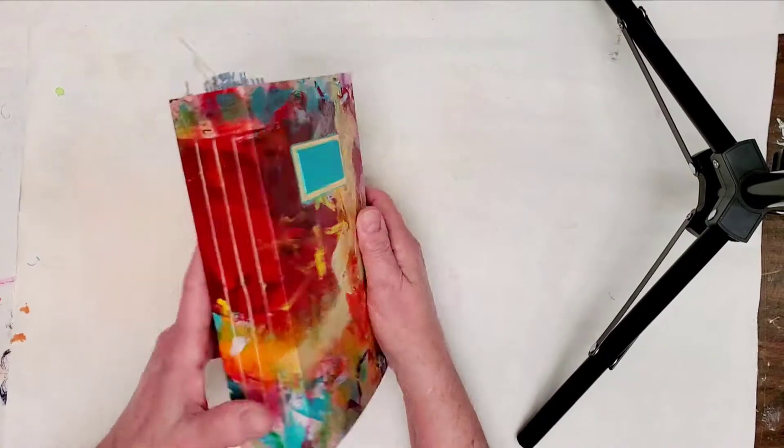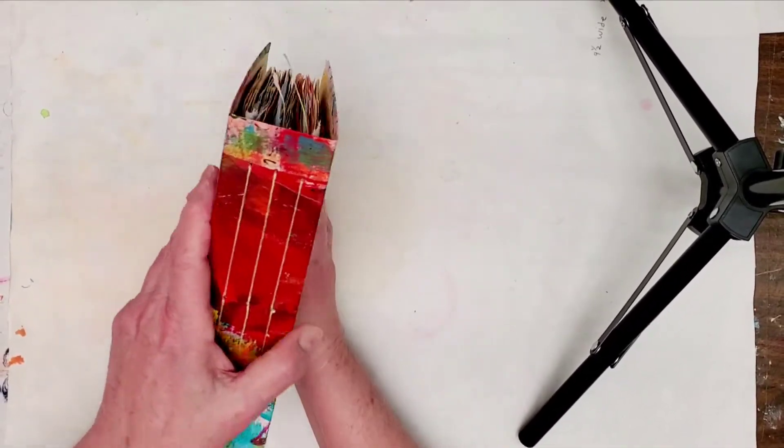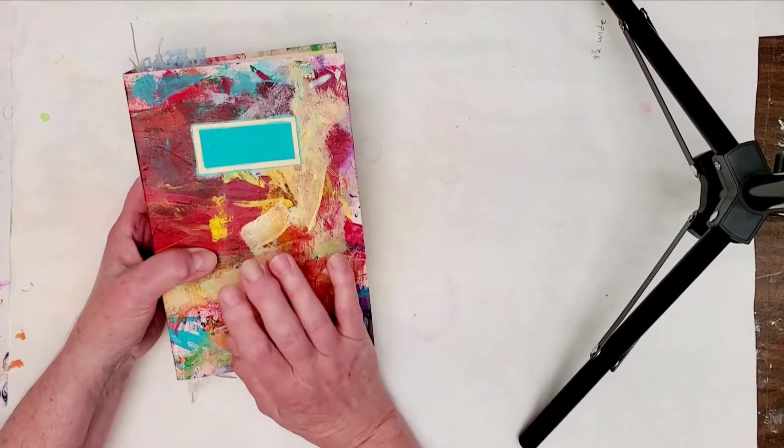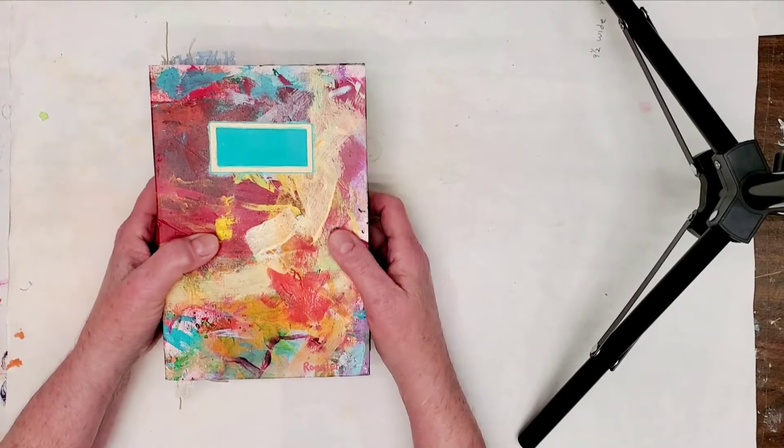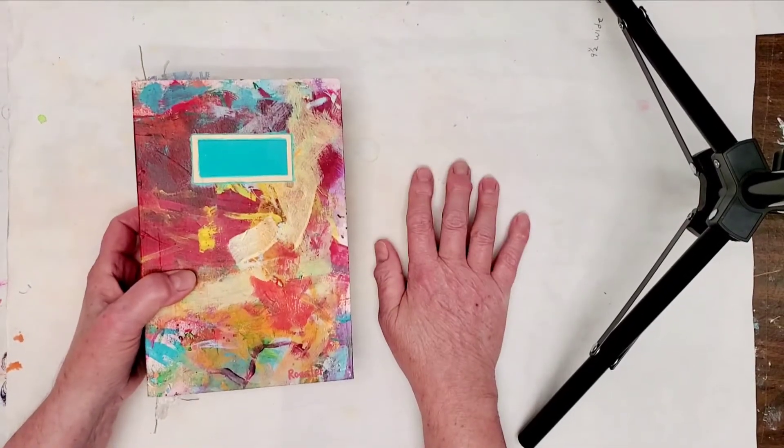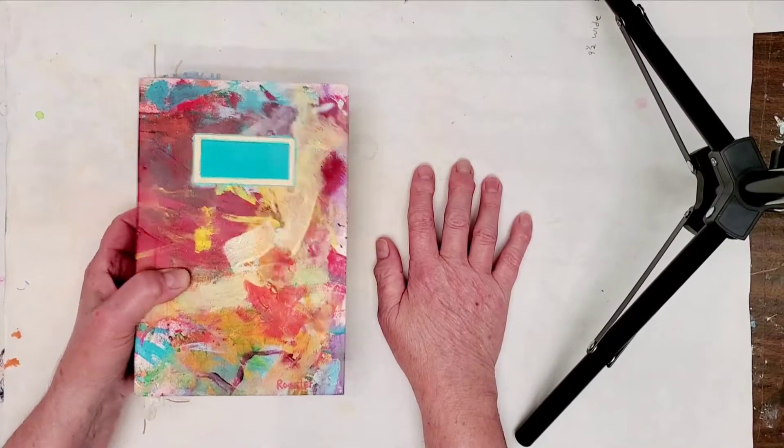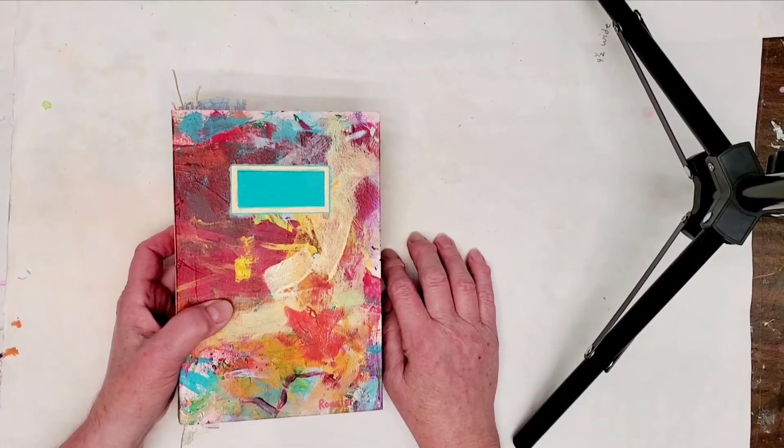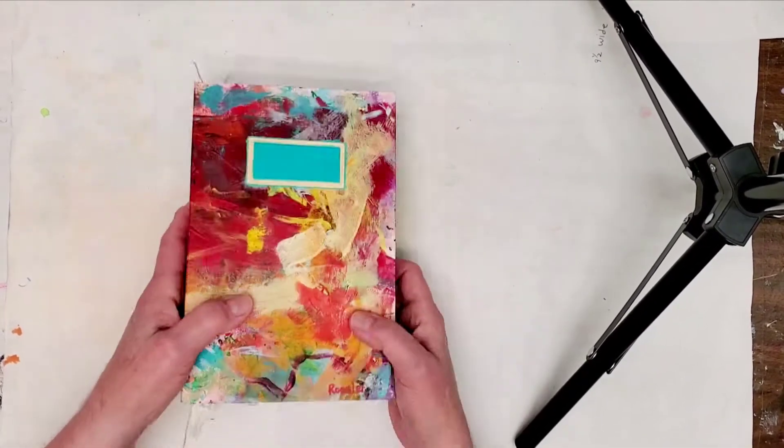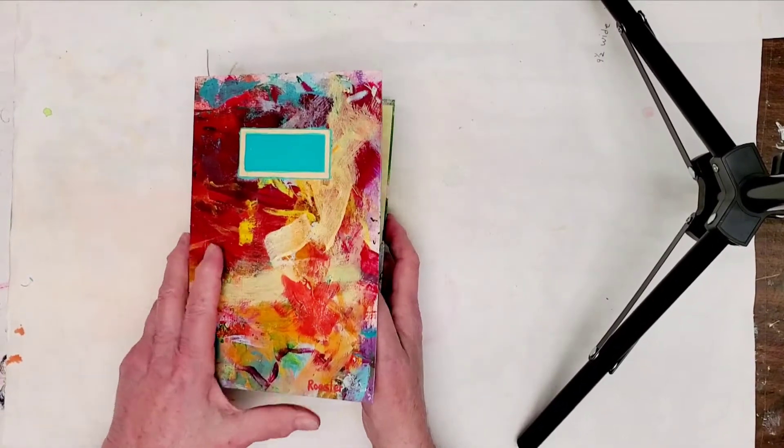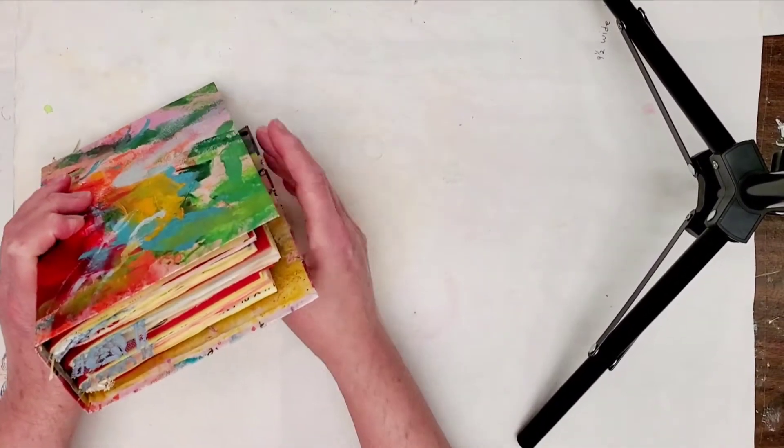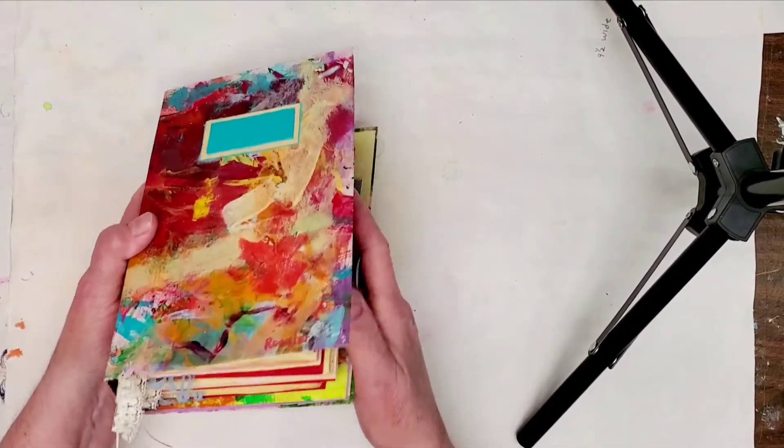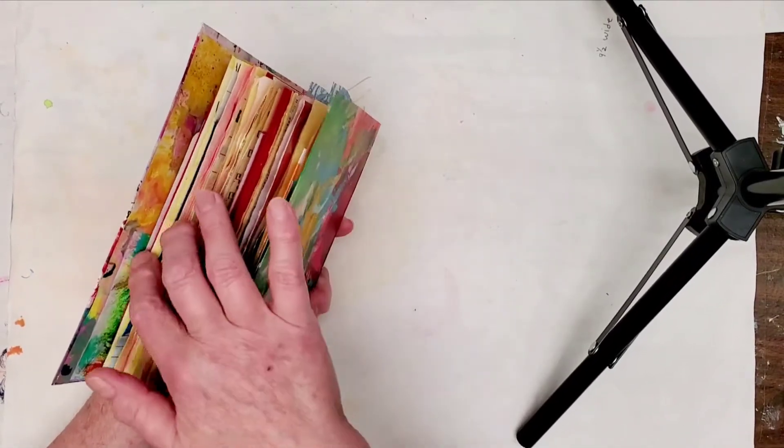I'm going to talk about how I choose colors. This is a new junk journal that I just made, it's about a two-inch spine with three signatures. The cover was made with my discard paper that I use while I'm working and I wipe my brushes and my stamp pads and everything off on it. When it gets full enough I use it to cover a journal.